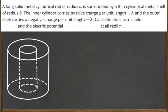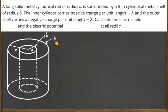Let's picture the problem. We have two concentric cylinders: the inner cylinder is a metal rod with radius a, and the outer cylinder is a shell with radius b. Between these two cylinders we have an empty space. The inner cylinder has a charge density of plus lambda and the outer has minus lambda — they have the same charge per unit length.